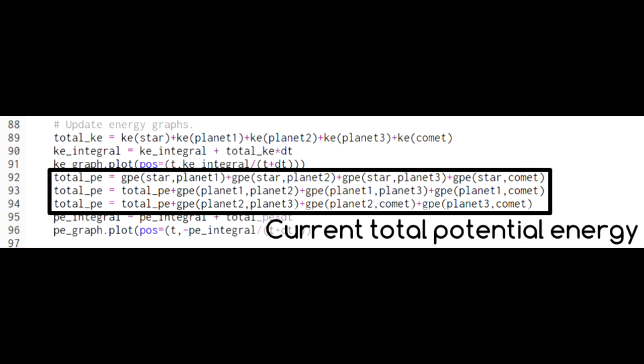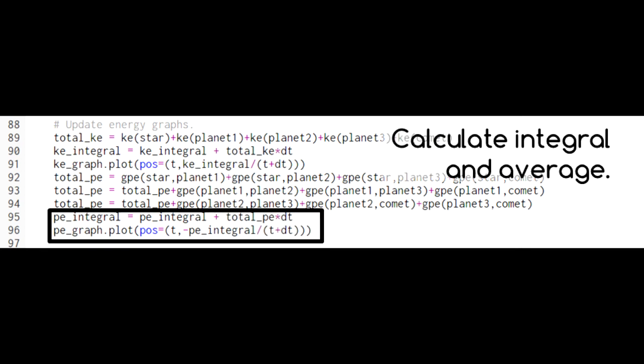We follow a similar but longer procedure to calculate the total potential energy at the current time. Again, we add this total times the time step to our current value for the integral and divide by the total time.